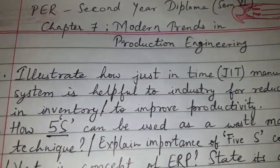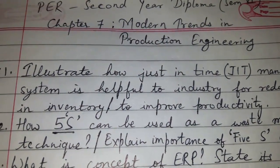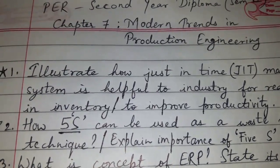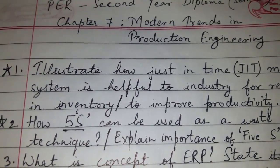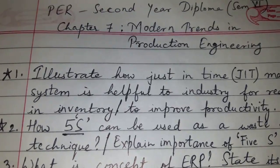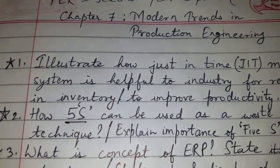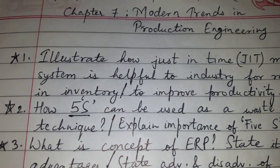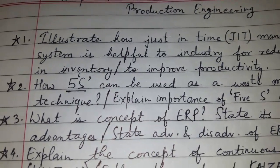Today's topic of discussion is chapter number seven: Modern Trends in Production Engineering, for the subject PER — Production Engineering and Robotics — second year diploma, semester six. For chapter number seven, I have listed a question bank.